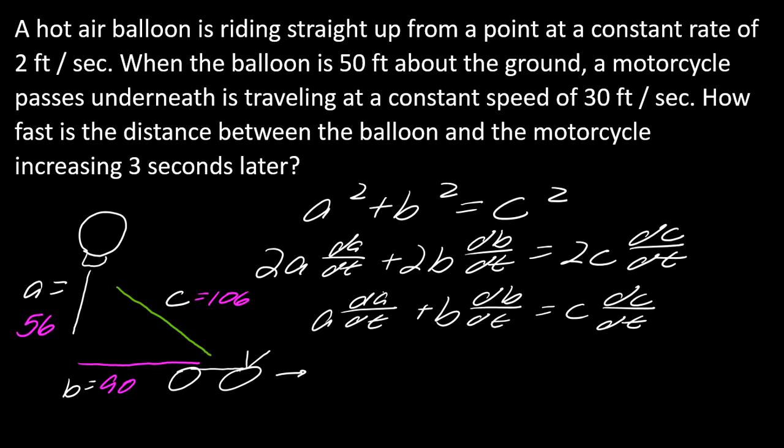Now I've actually got all the info that I need here. So now I can fill in my problem. I said my a was 56. My da/dt was 2. My b was 90. And the speed it's moving at is 30. And then my c is 106.